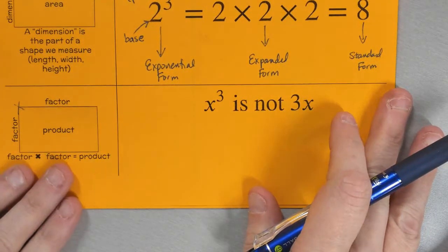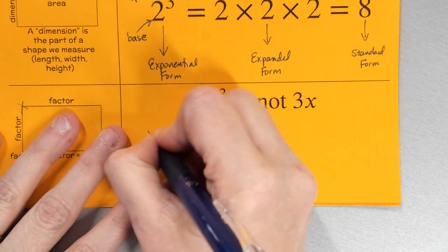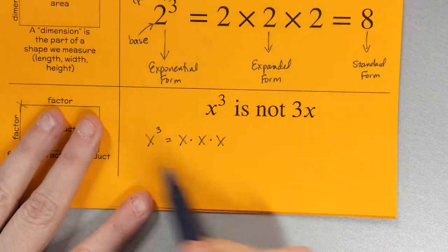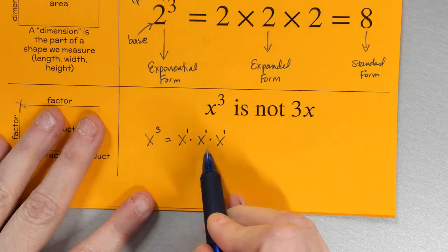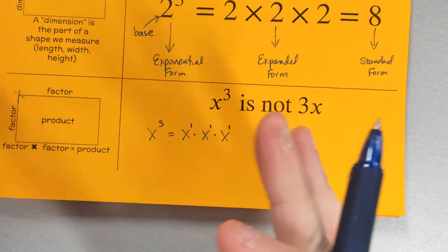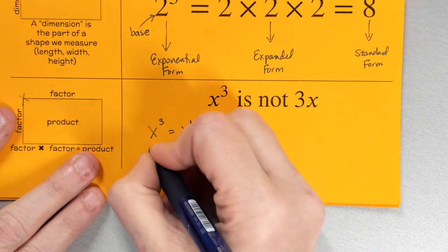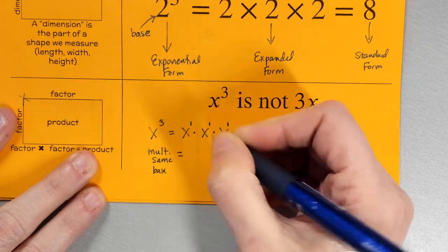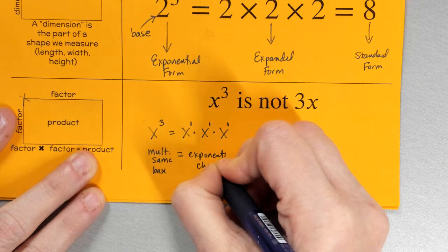This is really important: x to the third is not the same thing as 3x. x to the third is x times x times x. Remember, exponents are repeated multiplication. Think of it as x to the first, times x to the first, times x to the first. This x to the third shows that I multiplied x three times. So when I'm multiplying the same base, I'm changing my exponents.